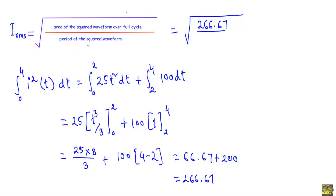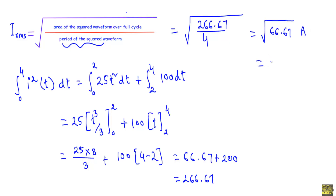The area under the squared waveform over the full cycle is 266.67, and the period of the waveform is 4 seconds. Dividing and taking the square root gives 66.67 ampere squared, and therefore the RMS value of the current is equal to 8.165 amperes. Thank you.